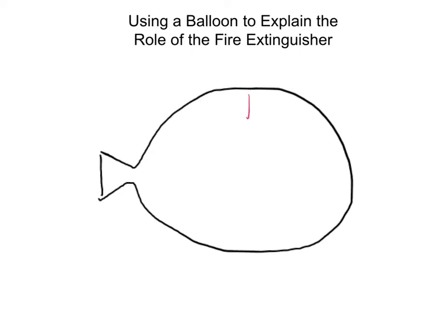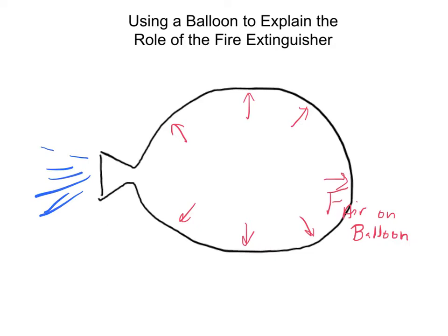That air pushes outward on the material of the balloon, creating an outward force applied on the balloon — the force of the air on the balloon. Over on this exterior end of the balloon there's an opening where all the air would come out, and there's no balloon material for the air to push on, so it just escapes outward.